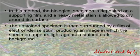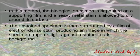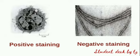In negative staining, the background is dark and the specimen image appears light. We do not stain the specimen itself; instead we stain the film behind it and obtain a light image of the specimen. You can see in this figure the difference between positive staining, where the specimen is dark, and negative staining, where the specimen appears light against a dark background.